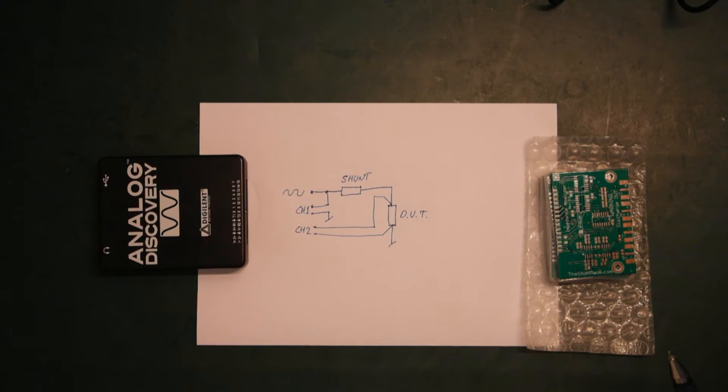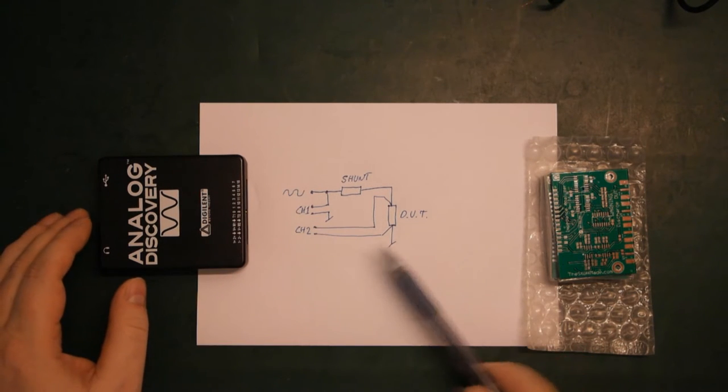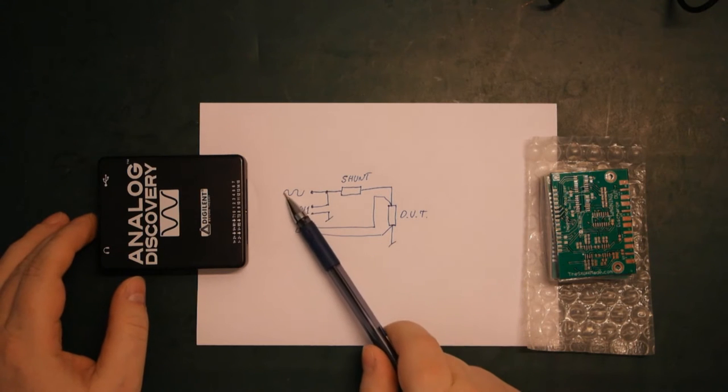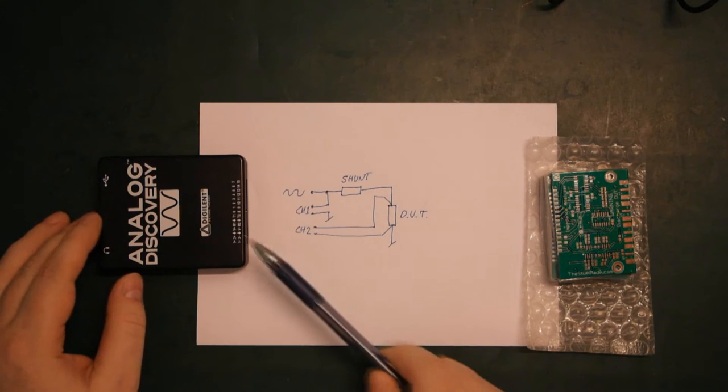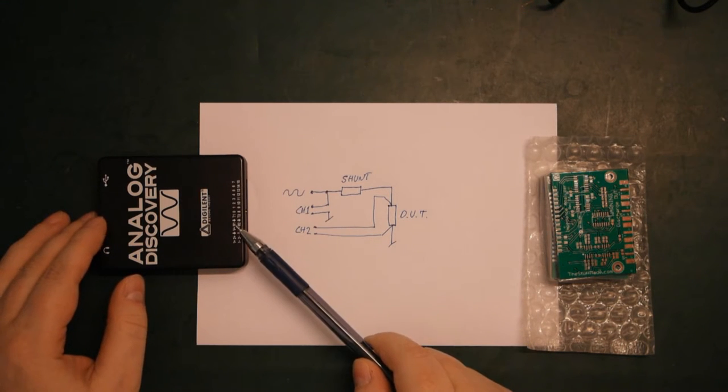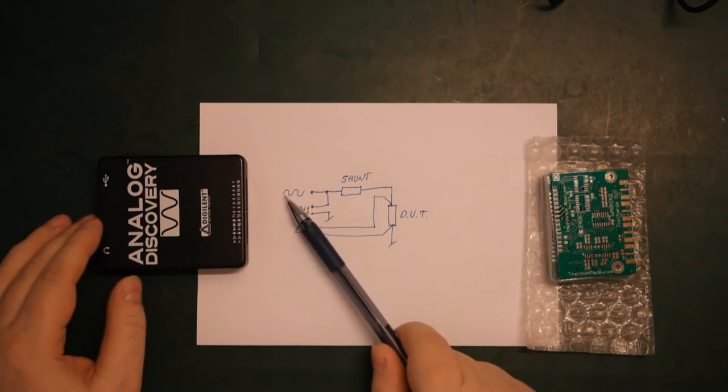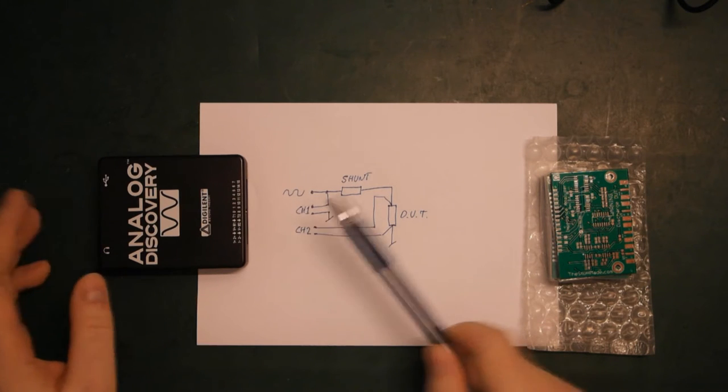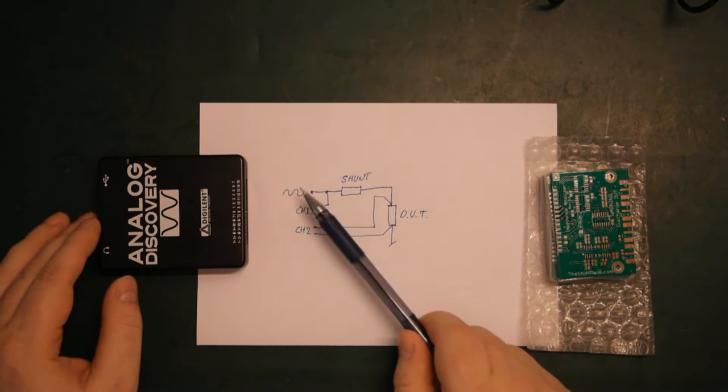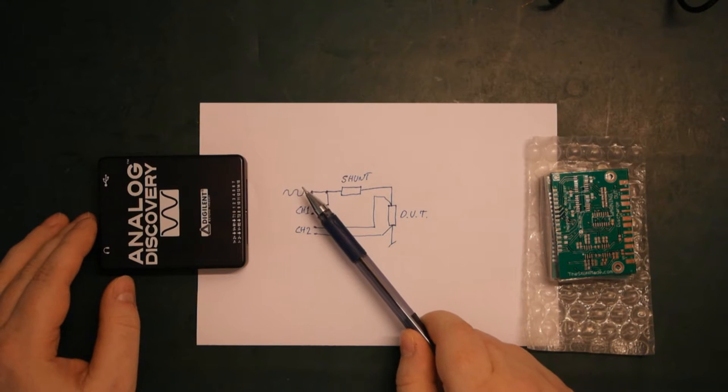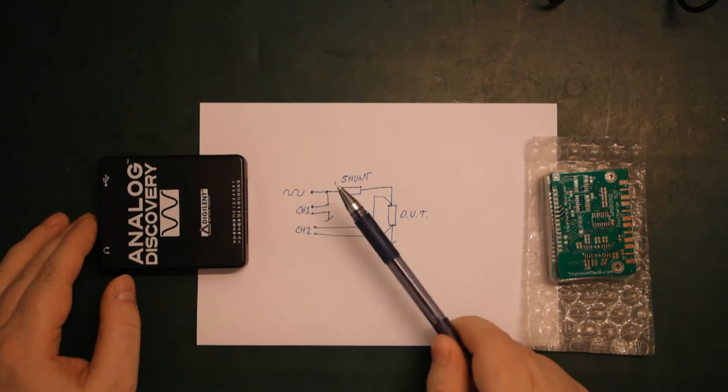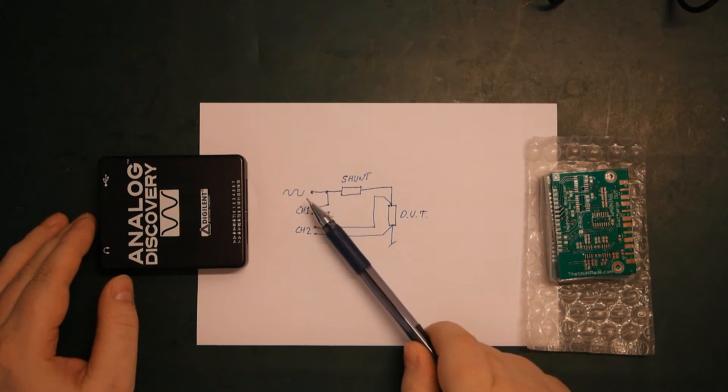So to measure impedance using the analog discovery, this is basically what we need. So first here we have wave outputs. So this is from the function generator. This is where we will have our sine wave output. We can run frequencies from one hertz up to 10 megahertz. Well, we can do 20 megahertz, but it starts rolling off quite drastically at 20 megahertz.